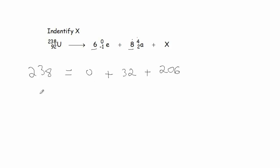Now, on the subscripts on the left side, there's 92. And on the right side, there's 6 negative 1's. So, there's negative 6 plus, in this case, this is 16, plus the unknown. Or, if you do the math, you'll determine that this needs to be 82.